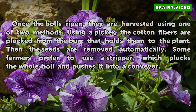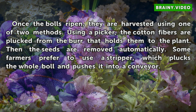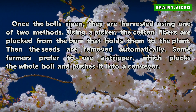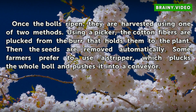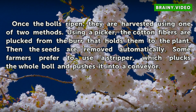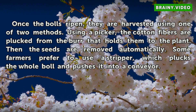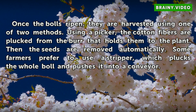Once the bolls ripen, they are harvested using one of two methods. Using a picker, the cotton fibers are plucked from the burr that holds them to the plant, and then the seeds are removed automatically. Some farmers prefer to use a stripper, which plucks the whole boll and pushes it into a conveyor.